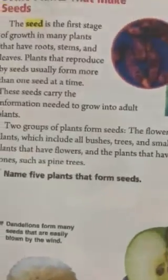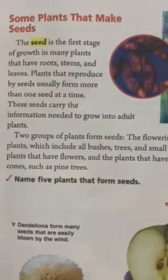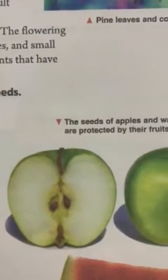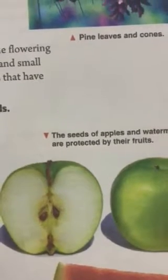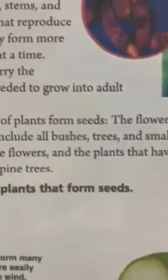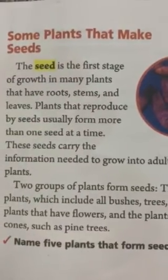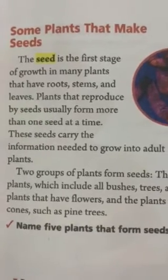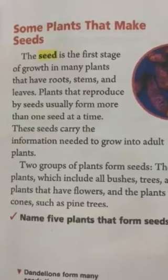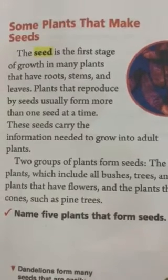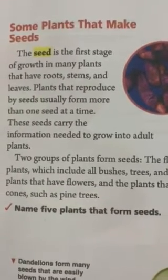We also have some plants that make seeds. What is a seed? As you see this apple here — what can you see inside this apple? You can see some seeds, which are reproduced by their fruits. We can reproduce apples by these seeds. A seed is the first stage of growth in many plants that have roots, stems, and leaves. Plants that reproduce by seeds usually form more than one seed at a time. These seeds carry the information needed to grow into adult plants.